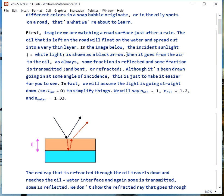When the light goes from the air to the oil, some of it will be reflected, some of it will be refracted or transmitted and bent. This same thing happens when the light goes from the oil to the water. Some of it's reflected, some of it's transmitted and bent.